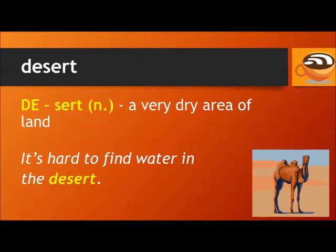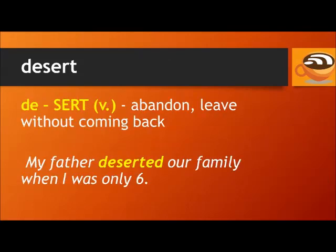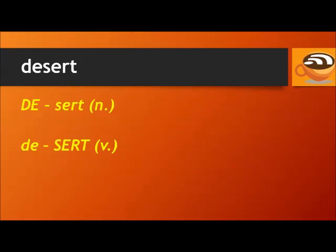Next, we have a very common one: 'desert' and 'desert.' A desert is a very dry area of land. For example: it's hard to find water in the desert. 'Desert' spelled with one S is a verb meaning to abandon, to leave without coming back. For example: my father deserted our family when I was only six. Desert. Desert.